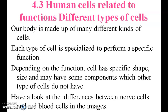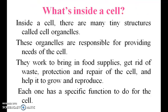Human cells are related to different types of functions. Each type of cell is specialized to perform a specific function. Depending on the function, cells have a specific shape and size, and may have some components which other types of cells do not have. Inside a cell, there are many tiny structures called cell organelles, which are responsible for providing the needs of the cell.